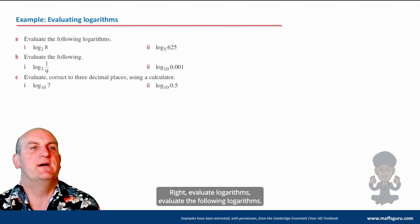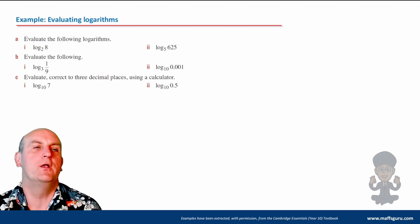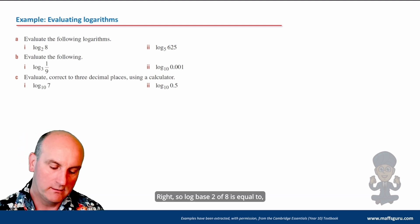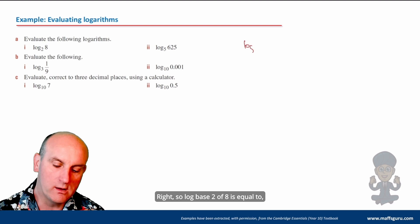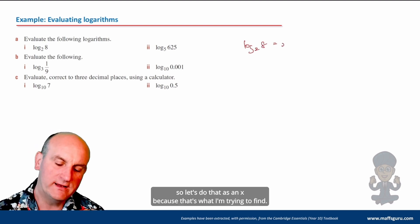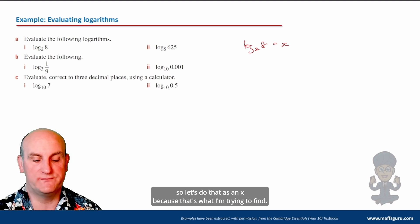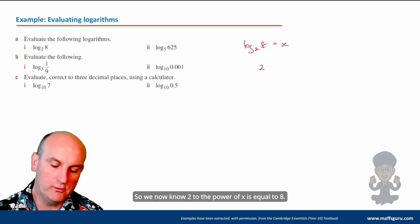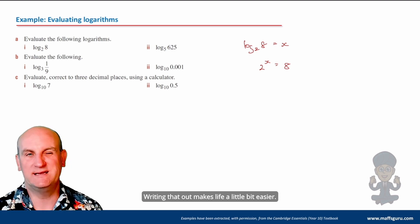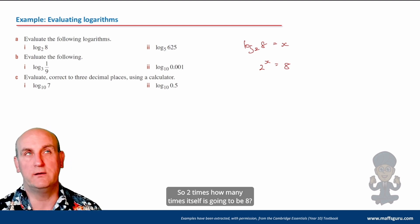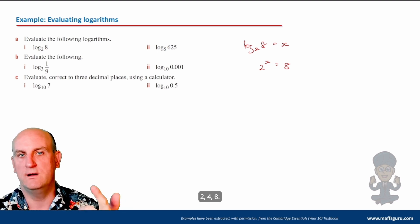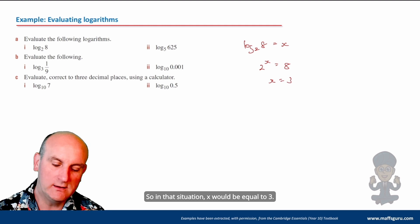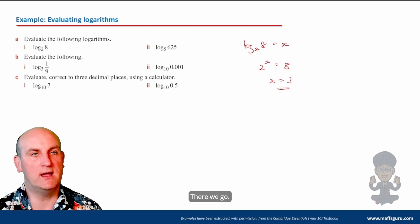Evaluate the following logarithms. Log 2, 8. So log base 2 of 8 is equal to, let's do that as an x because that's what I'm trying to find. So we now know 2 to the power of x is equal to 8. Writing that out makes life a little bit easier. So 2 times how many times itself is going to be 8? 2, 4, 8. So in that situation, x would be equal to 3.